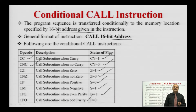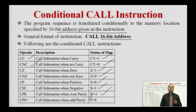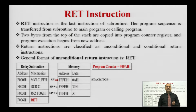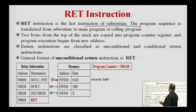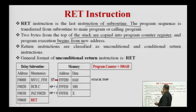During execution of these conditional CALL instructions, the microprocessor first checks whether the condition is true or satisfied. When the condition is satisfied, the processor transfers control from the main program to the subroutine and executes the subroutine; otherwise it executes the next instruction. Next is the RET instruction. RET is the last instruction of any subroutine. The program sequence is transferred from the subroutine back to the main program after execution of the RET instruction. The two bytes from the top of the stack are copied into the program counter register and program execution begins from the new address.